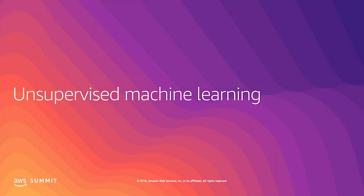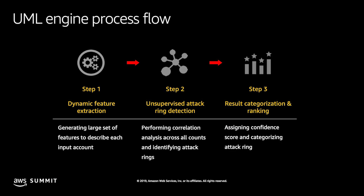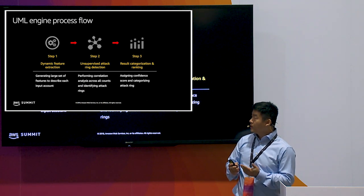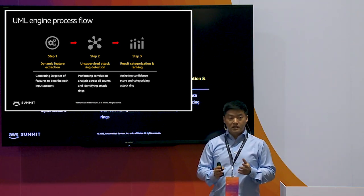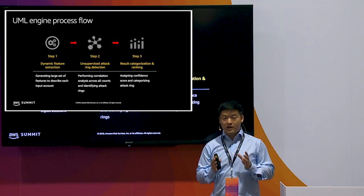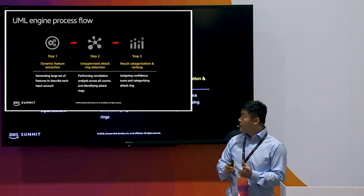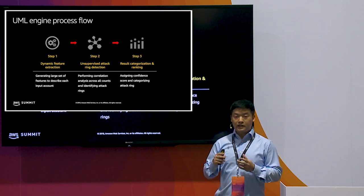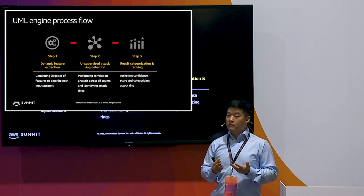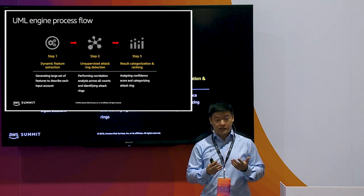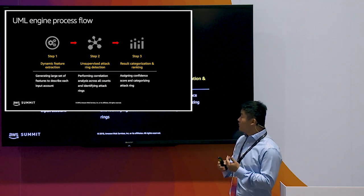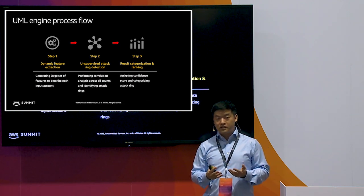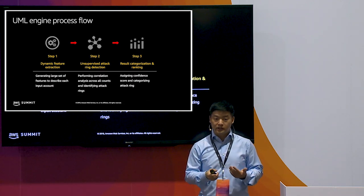Let's switch gears and dig into our Datavisor unsupervised machine learning platform. This is the overall architecture, split into three steps. The first step is what we call feature extraction. With the features extracted from the raw data, we run our unsupervised machine learning algorithm to detect fraudulent activities. Finally, we have a result ranking system that gives human-readable results to our customers so they can take real actions on the detection results.